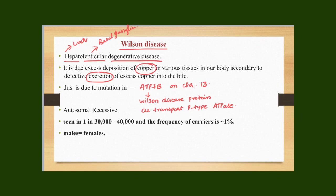Wilson's disease is an inherited disease. The pattern of inheritance is autosomal recessive, meaning both copies of the gene have to be mutated to produce a disease state. Wilson's disease is seen in about 1 in 30,000 to 40,000 people, and the frequency of carriers is relatively high, around 1%. It involves both males and females equally.